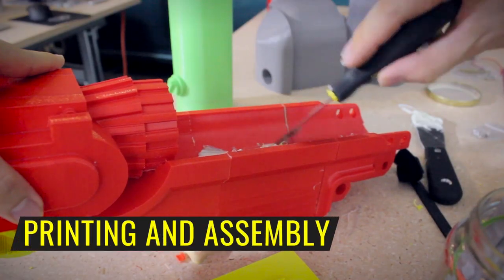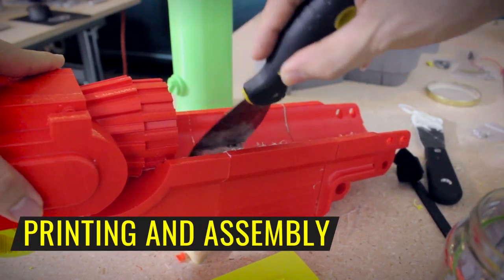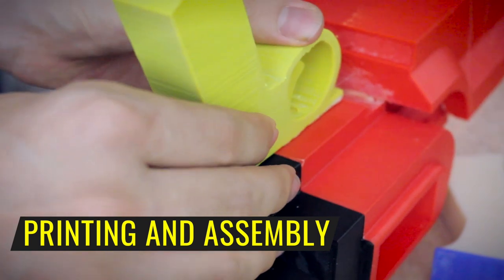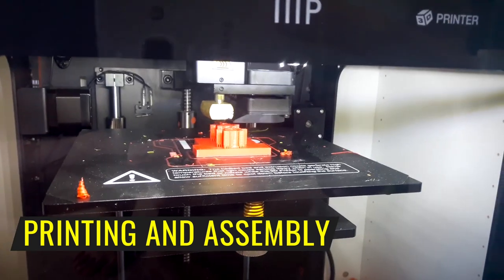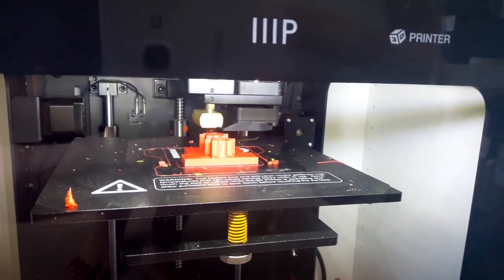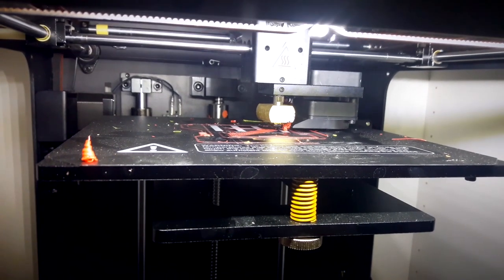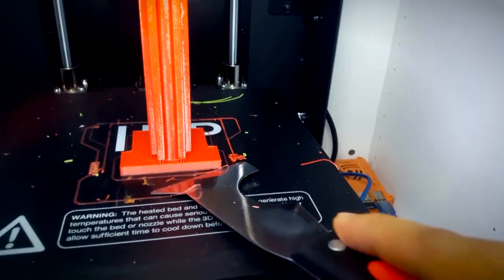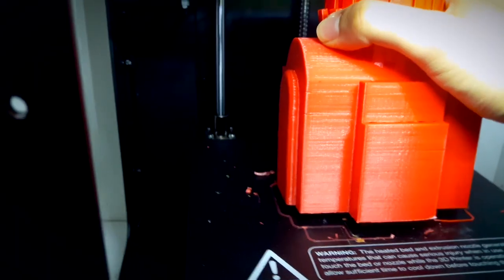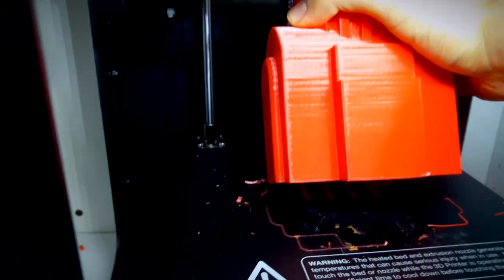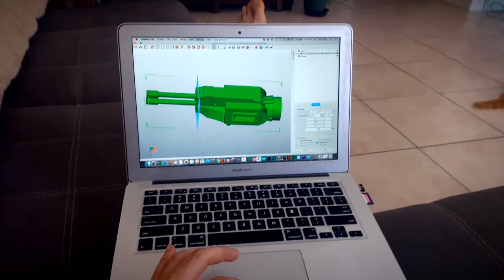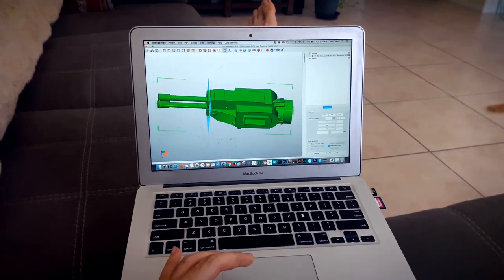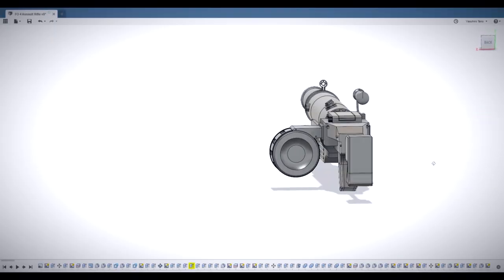To print this build, I used ABS filament from Monoprice for the body and wood filament for the faux wood grips and handles. Since the length of the model was around a meter long, I clearly had to split up the model in order to get it to fit on my Maker Select beds, which max out at about 200 by 200 by 180 millimeters. To accomplish this, I used a program called Netfab to make quick and dirty plain cuts.